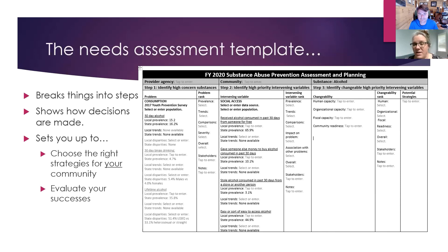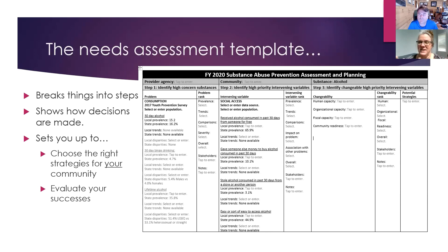Some things are really big, important contributors to a problem but aren't things we actually have capacity to address. So we try to combine finding the biggest problems in our community, understanding why they're happening and how we could change that, and what we actually have capacity to do. That sets us up to choose good, effective strategies and to evaluate our efforts — so it's super important on many levels to do a good assessment and really break it down into steps.